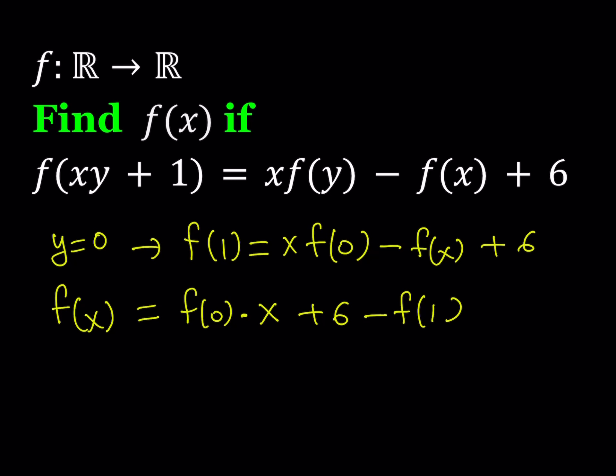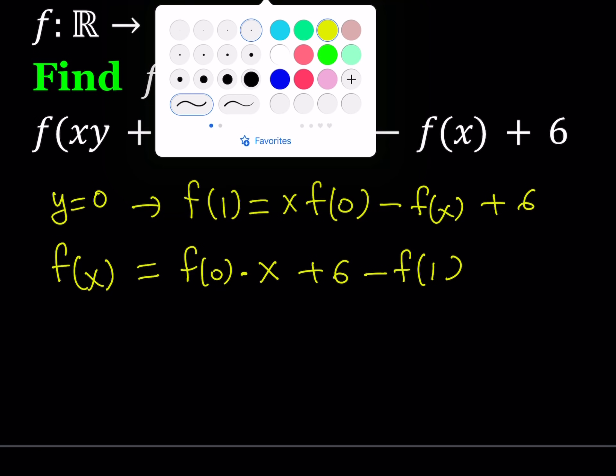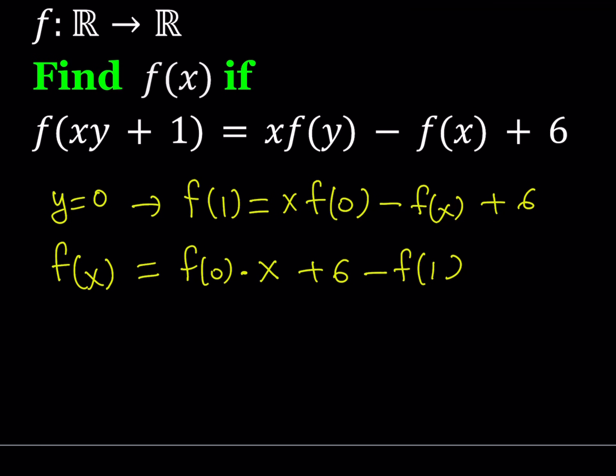This is nice because we got something that looks like a linear function. Since f of 0 is a constant and f of 1 is a constant, we have a constant times x plus another constant — a linear function of the form mx plus p. So we can call f of 0 equal to a and the expression 6 minus f of 1 equal to b, giving us f of x equals ax plus b.